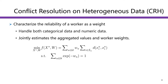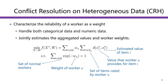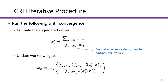I will introduce two state-of-the-art truth discovery methods that are commonly used in crowdsourcing systems. The first one is the CRH model. CRH model measures the reliability of a worker as a weight. It can handle both category and numerical data. CRH model formulates the estimation of the aggregated values and worker weights as an optimization problem. CRH model solves this optimization problem by iteratively updating two steps. In the first step, the worker weights are fixed and the aggregated value for item i is updated by a weighted equation.